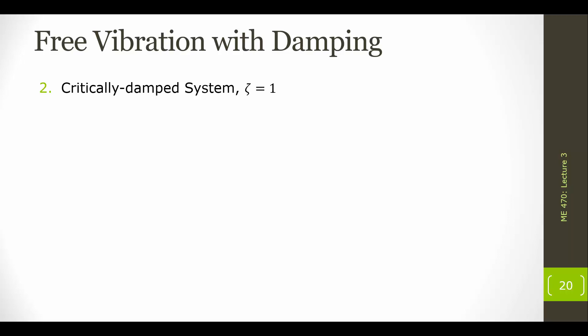A second possible damped system will arise when we have a critically damped system, and this is going to happen when our damping ratio ζ is equal to 1, meaning that the roots of our characteristic equation are real but repeating.